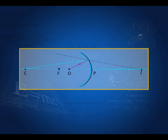Here is the ray diagram for this. The light goes like this, gets reflected, and appears to come from point I. So the light appears to come from I, meaning I is the virtual image. A virtual image is always erect and larger in size in the case of a concave mirror when the object is within the focal length.